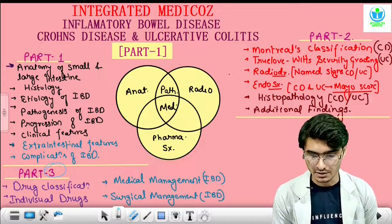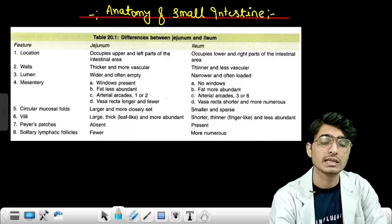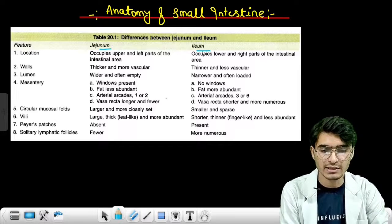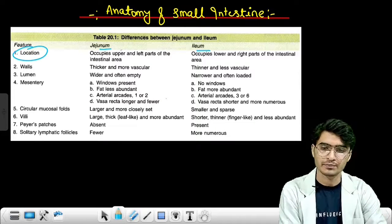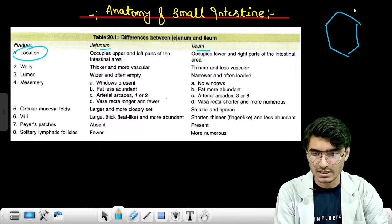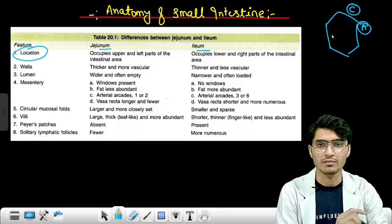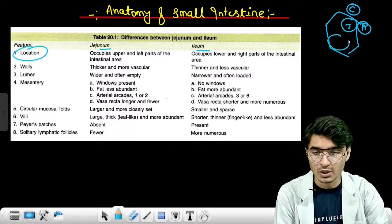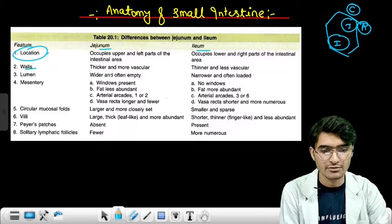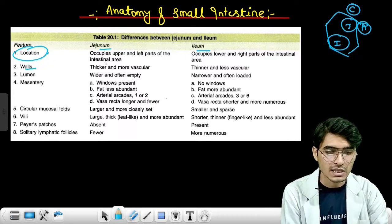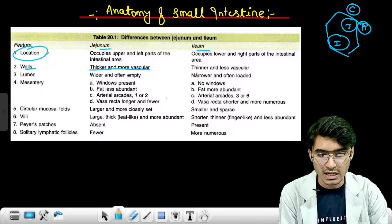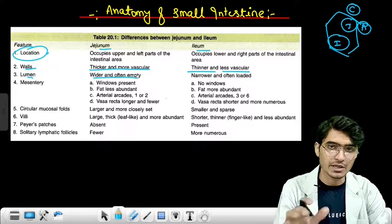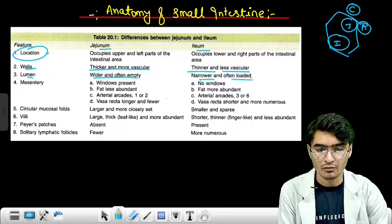Now we will go for the anatomy of the small intestine, specifically jejunum and ileum — we have covered duodenum in the peptic ulcer section. The jejunum is located in the left upper quadrant and the ileum in the right lower quadrant. The walls of the jejunum are thicker and more vascular, while the walls of the ileum are thinner and less vascular. The lumen of the jejunum is wider and often empty, while that of the ileum is narrower and more often loaded.